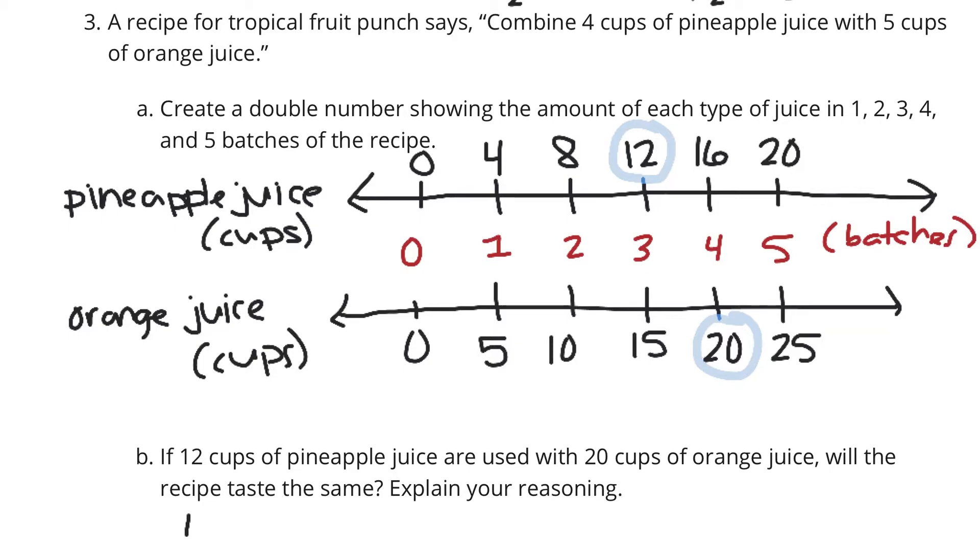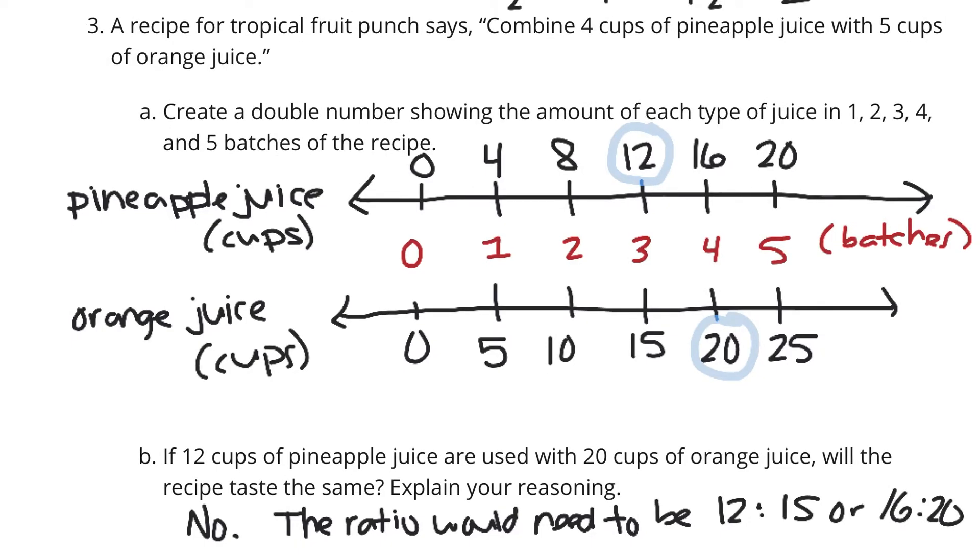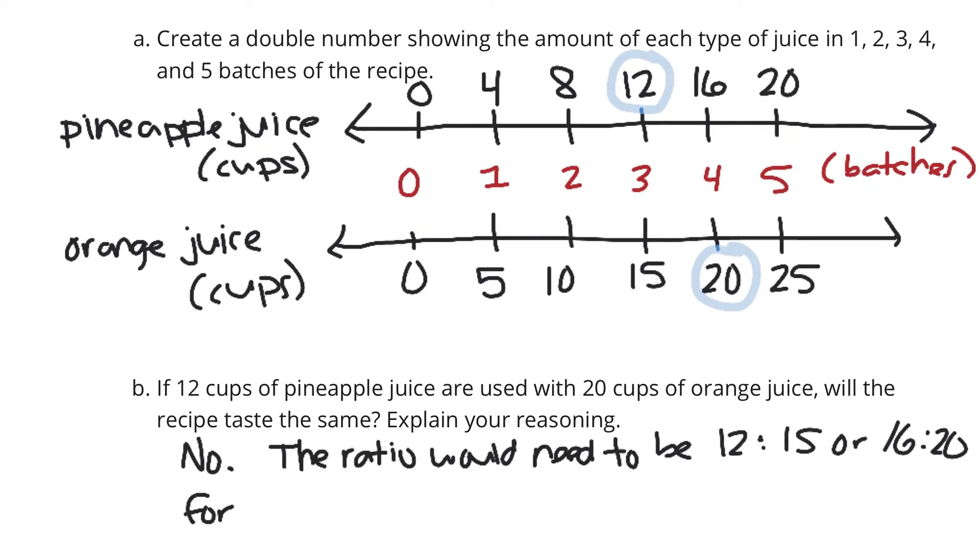Well, no. It won't. The ratio would need to be 12 to 15 or 16 to 20 for the recipe to taste the same. Just looking here, 12 and 20 are in different spots. 12 to 15 would taste the same. 16 to 20 would taste the same. But you're basically saying this is 3 batches worth of pineapple juice and 4 batches worth of orange juice. That's not going to taste the same.